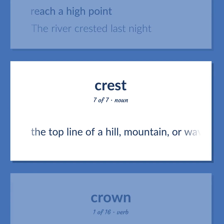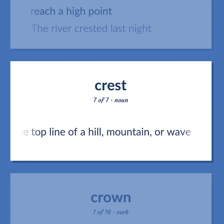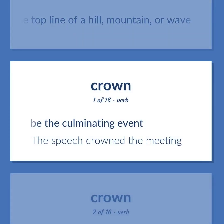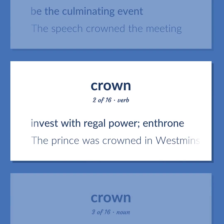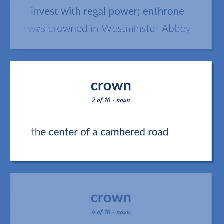The top line of a hill, mountain, or wave. Be the culminating event — the speech crowned the meeting. CROWN: Invest with regal power and throne — the prince was crowned in Westminster Abbey. The center of a cambered road. An ornamental jeweled headdress signifying sovereignty.